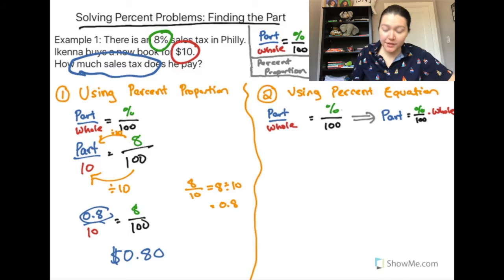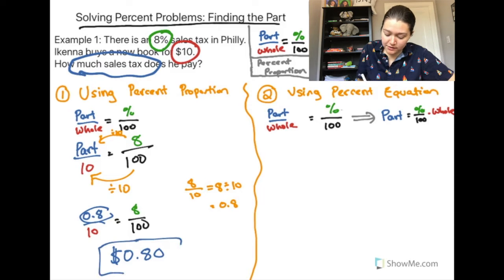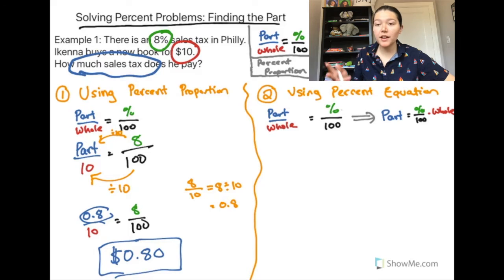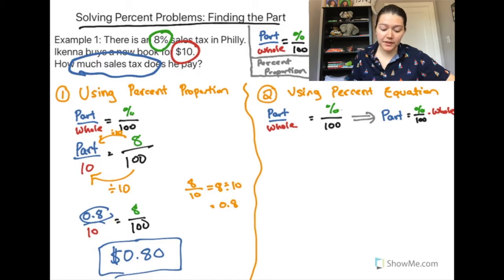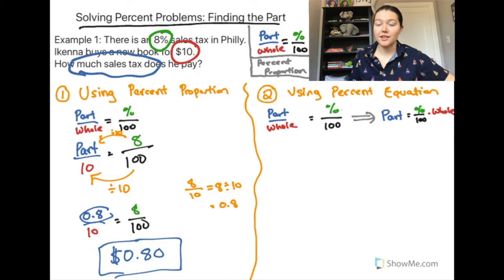So the part is 0.8, which is the amount of the sales tax — in dollar form, that's 80 cents. That means Akena is buying a book for $10 and will have to add 80 cents of sales tax. Even though the question doesn't ask this, the final amount Akena pays at checkout is $10.80, because we're adding the cost of the book plus the sales tax. That's one method.